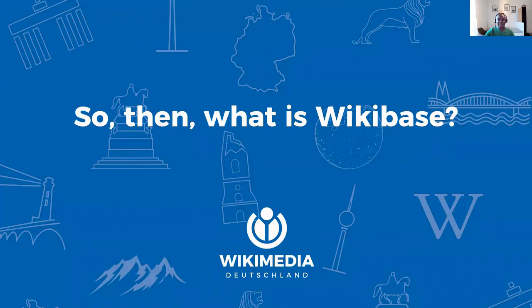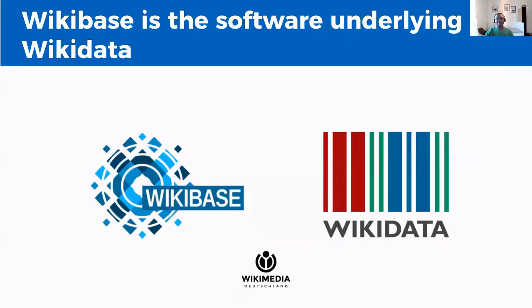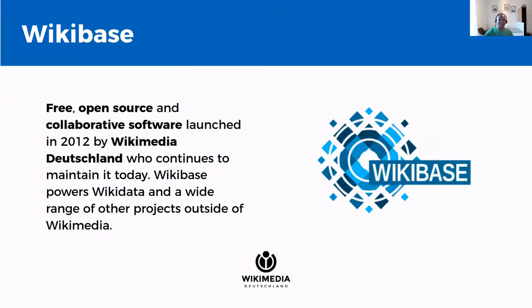So what is Wikibase? Wikibase is the software that powers Wikidata. Technically, Wikibase is a set of extensions that turns the MediaWiki software into a database for structured data, and the best Wikibase example out there is Wikidata. Wikibase was developed by Wikimedia Germany in 2012, primarily to power Wikidata. After a while, people started coming to us and asking if they could run their own thing — their own little Wikidata — and that was how Wikibase as a standalone product started.